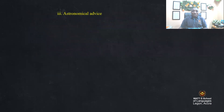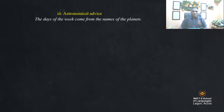Let's have an astronomical fact. The days of the week come from the names of the planets — it's something that I'm teaching you today. Lundi comes from lune, that is moon. Mardi comes from Mars, planète Mars. Mercredi comes from Mercure.